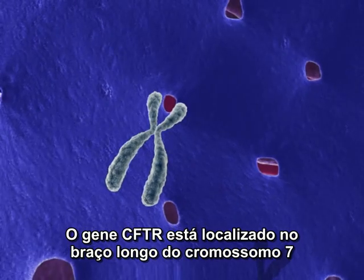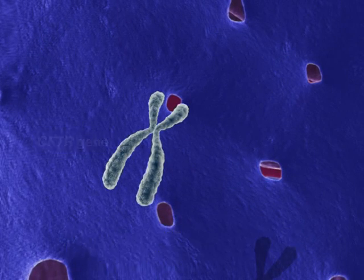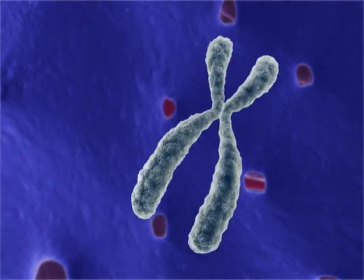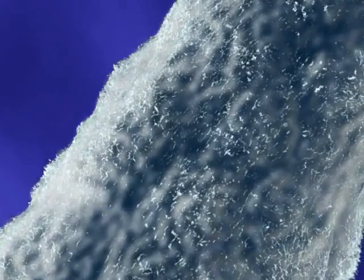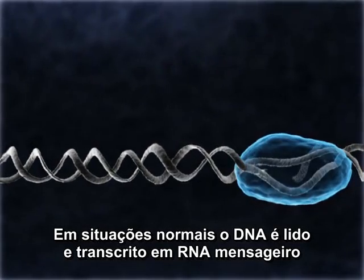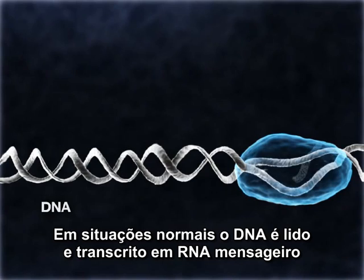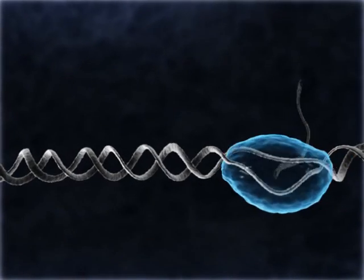The CFTR gene is located on chromosome 7. Under normal circumstances, the DNA is read and transcribed to messenger RNA.